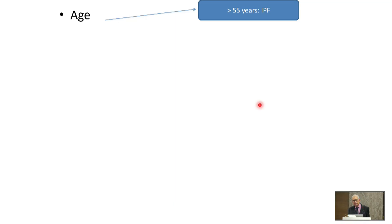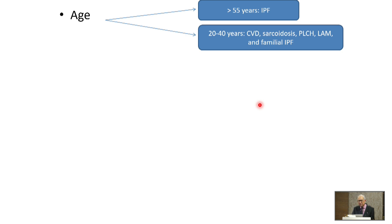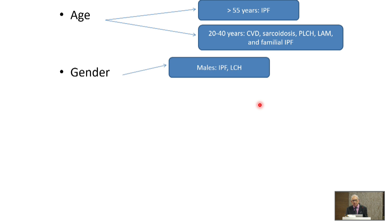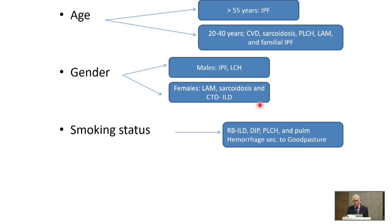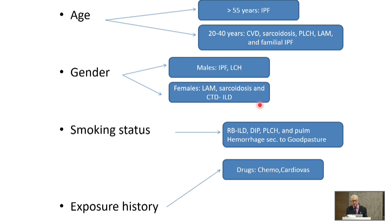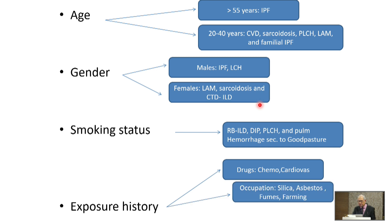You have to look at age — if more than 55, IPF is more likely; younger patients may have sarcoidosis and other diseases. If male, IPF is more likely, but nothing is absolute. In females, LAM, sarcoidosis, and CTD become important. If the person is smoking, RB-ILD, desquamative interstitial pneumonia, PLCH, and pulmonary hemorrhage and Goodpasture's syndrome need consideration.